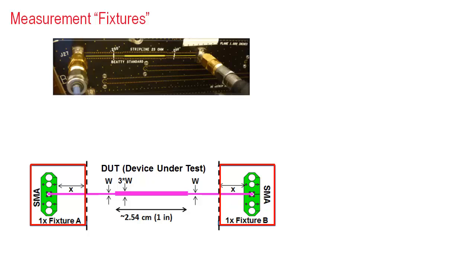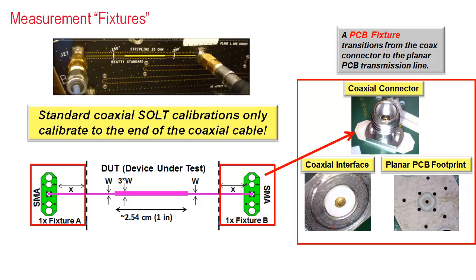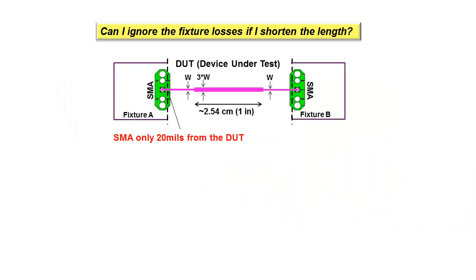For this example PCB test structure, the measuring instrument was calibrated, but only to the ends of the coaxial cables. On the right, we see the additional PCB fixture consisting of the coaxial connector transitioning to the internal copper strip line that is not calibrated out of the measurement. If the fixture is the problem with why simulations do not match measurements, then engineers will often ask the question, can I ignore the fixture losses if I shorten the length?